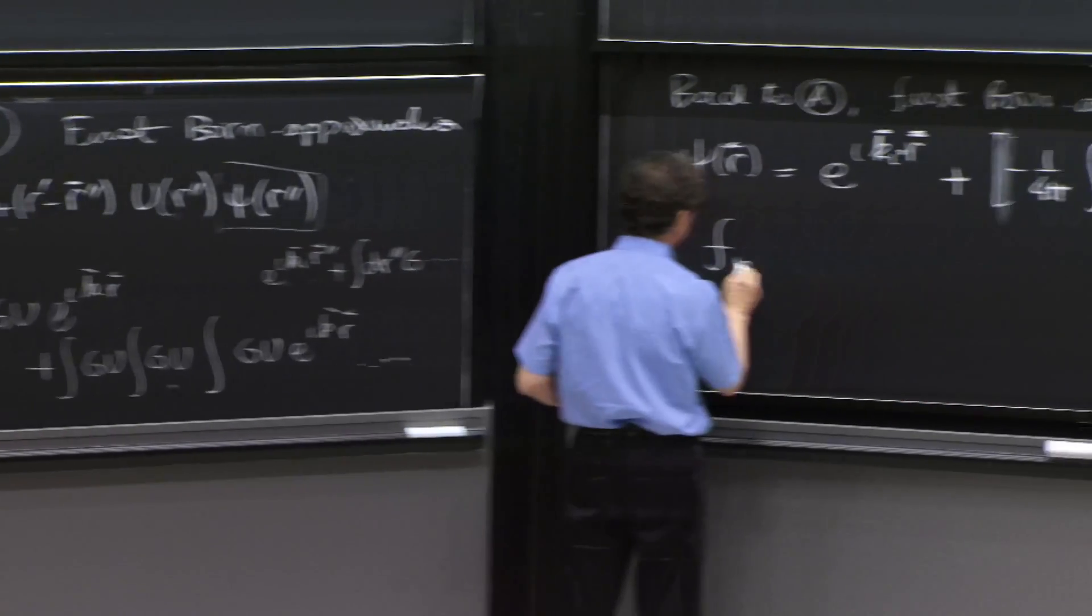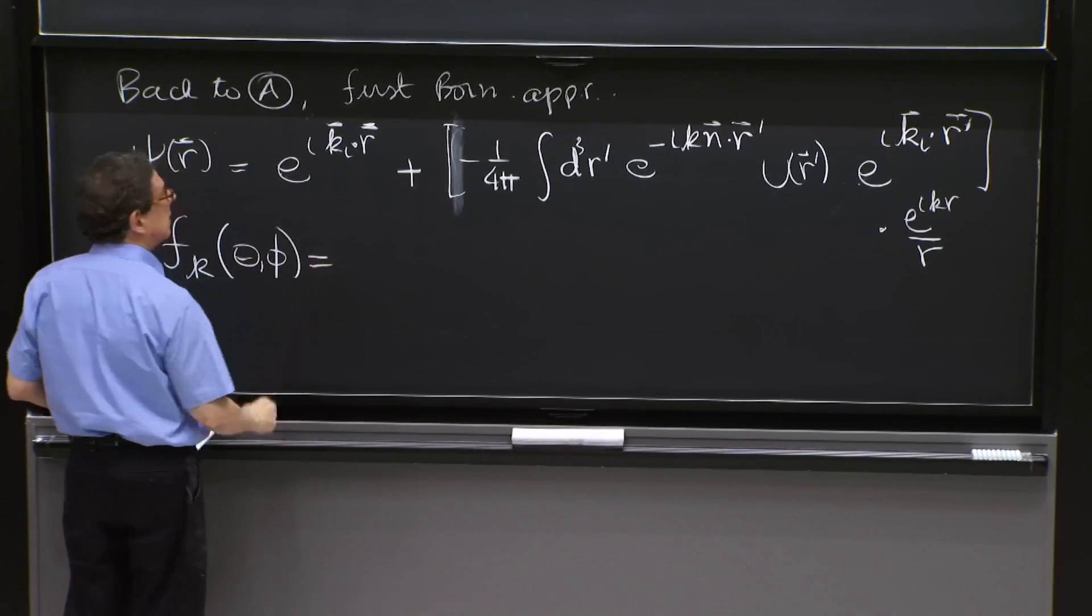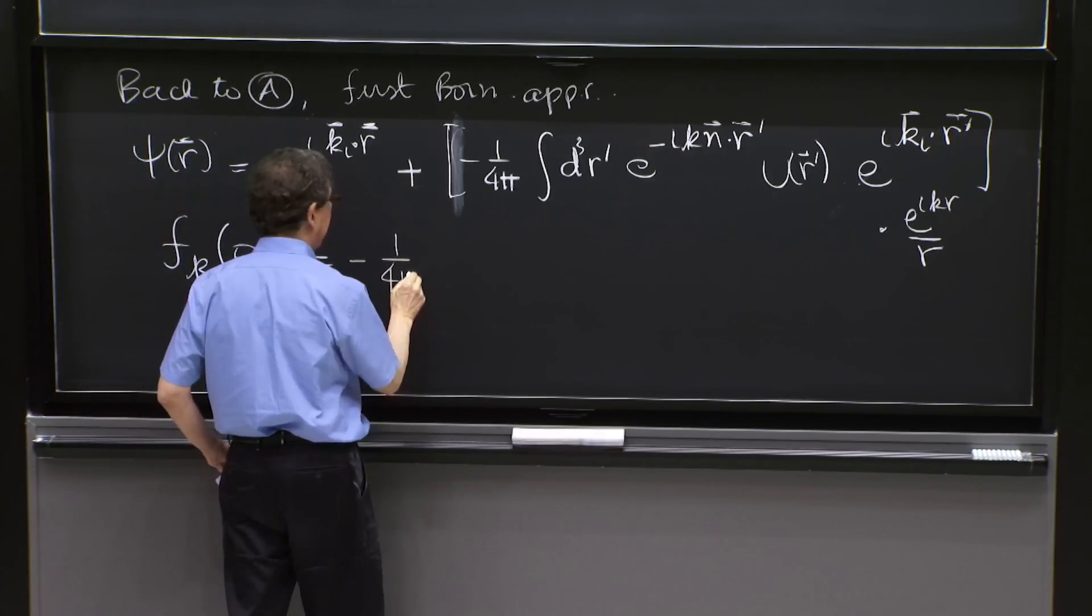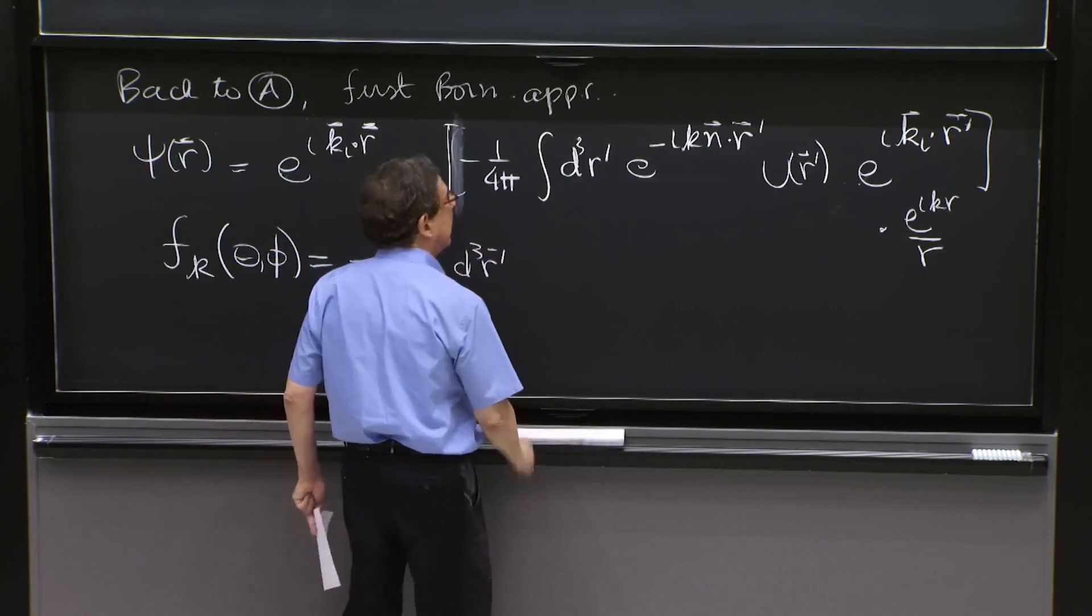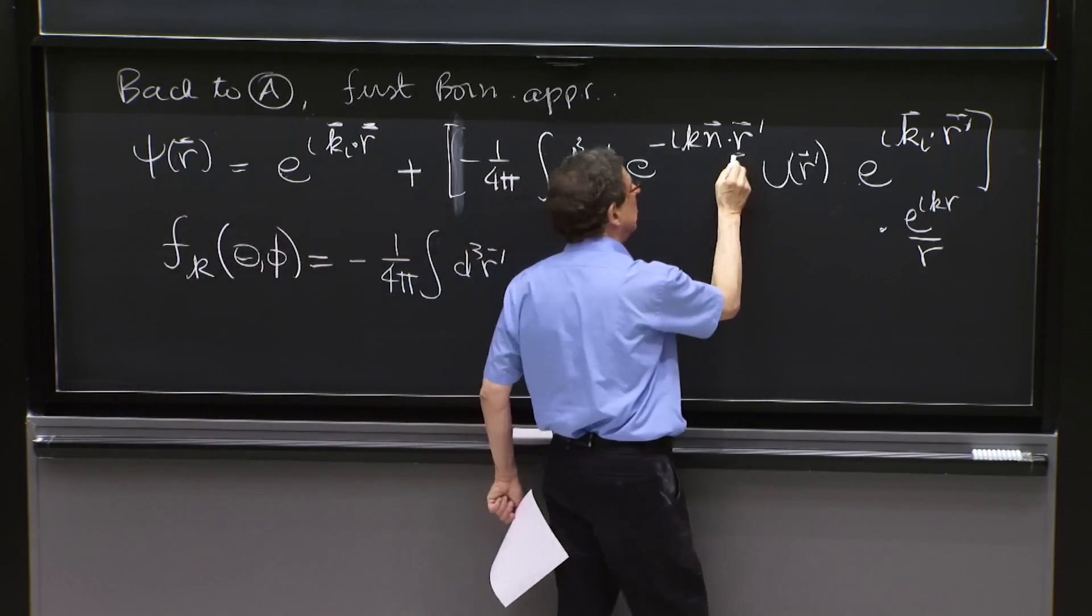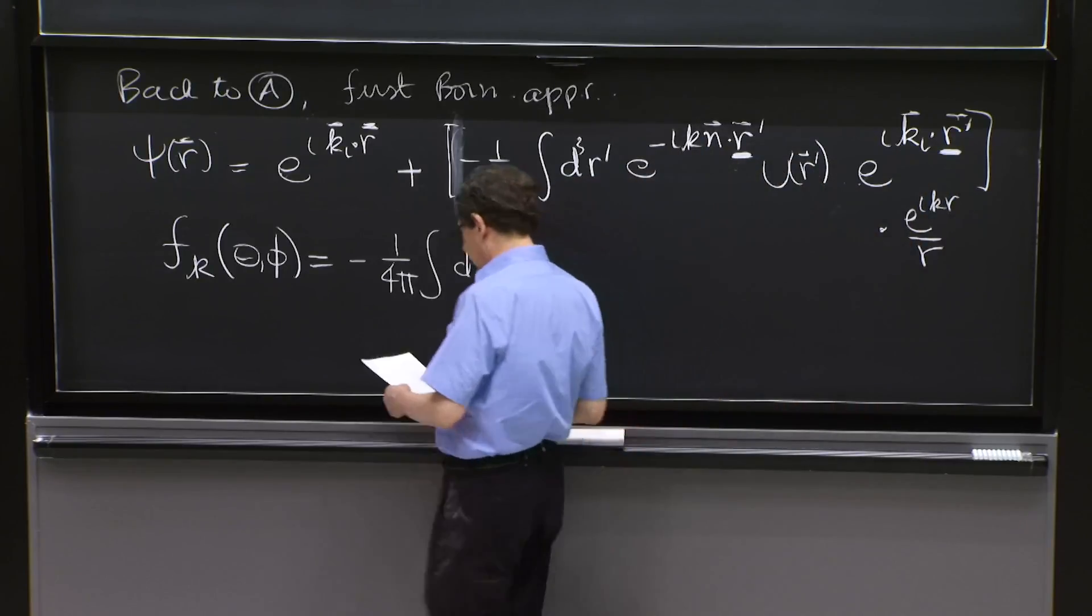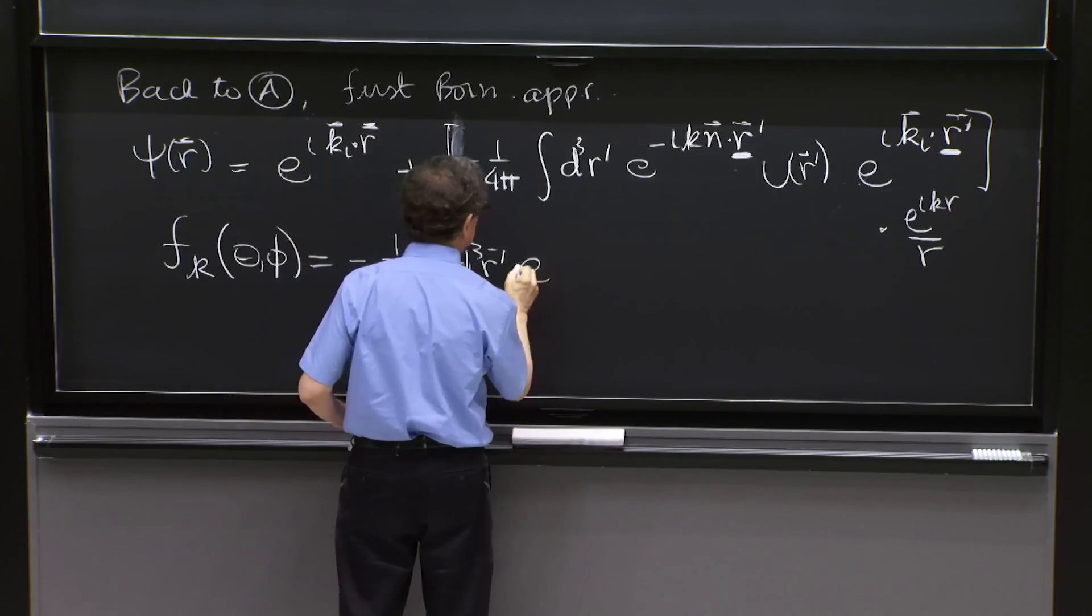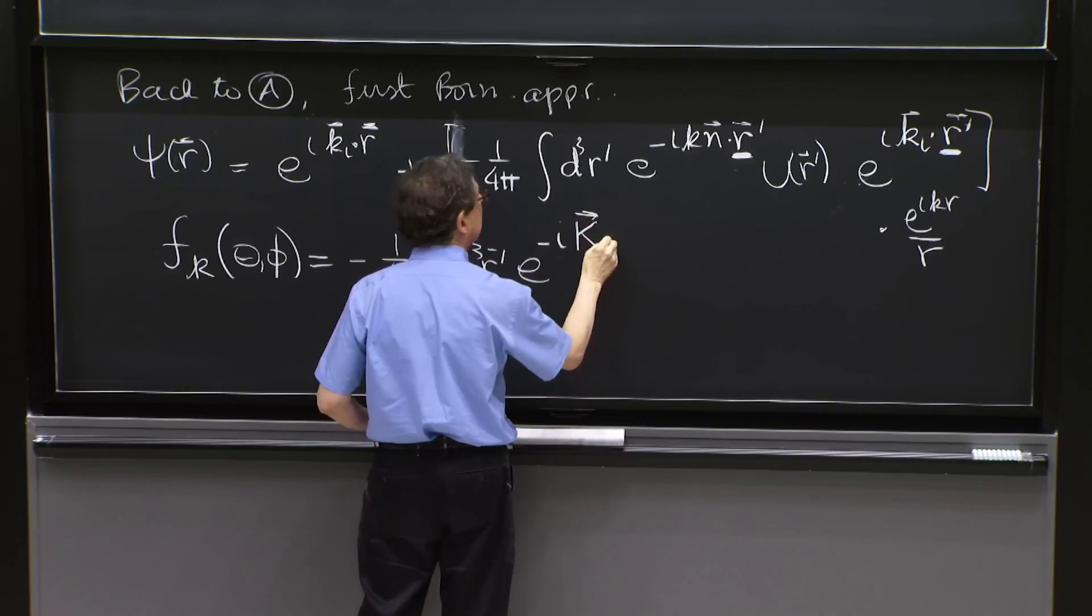So here we have an answer. F at wave number k of theta and phi is equal to this integral. Let's write it out. Minus 1 over 4 pi integral d cube r prime. And now we will combine the exponentials. Happily, the two exponentials depend on r prime.